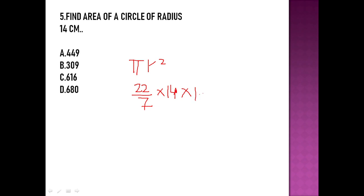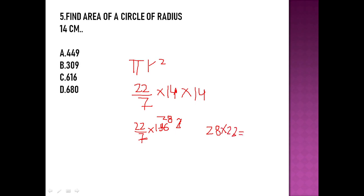14 multiplied by 14 gives us 196. With 22/7, we have 196 divided by 7, which equals 28. Then 28 multiplied by 22 gives us 616 cm². So option C, 616, is the right answer.